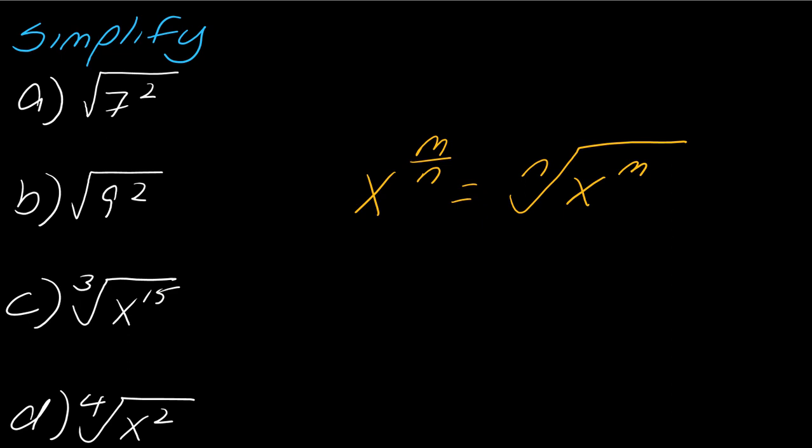So okay, if I want to apply this rule then to this first one, this is a square root so we assume that there's an invisible two there. So this is just going to be 7 to the 2 over 2, so what does this equal? Well, this just equals 7, and we probably already knew that. Okay, so let me make some space.